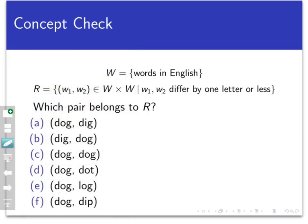So the answer here is all the pairs but the last one belong to this relation, because for each of the other pairs, the words in the pairs are either equal or else they differ by only one letter. But the last pair differs by two letters, so it does not belong to the relation.